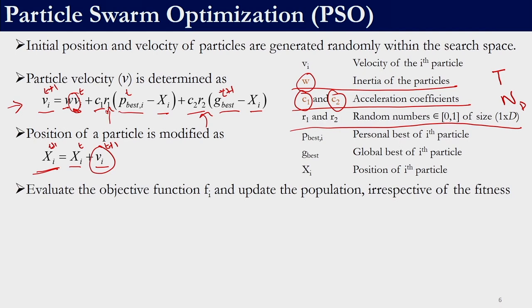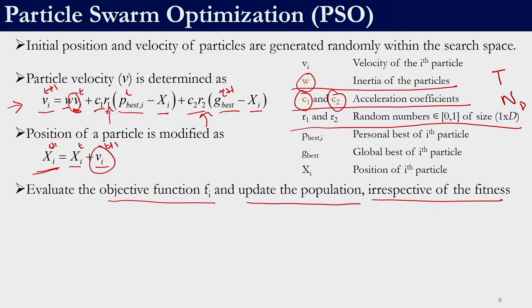Once the position of a new particle has been identified we need to evaluate its objective function or fitness function and update the population. We need to update the population irrespective of fitness — there is no greedy search involved. The position is definitely going to be updated whether the solution is good or bad. This is unlike TLBO wherein we employed a greedy selection mechanism — only if the new solution was good was it taken into the population. In PSO the new position is always taken into the population. That is one major difference between TLBO and particle swarm optimization.